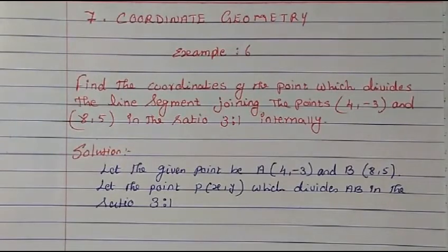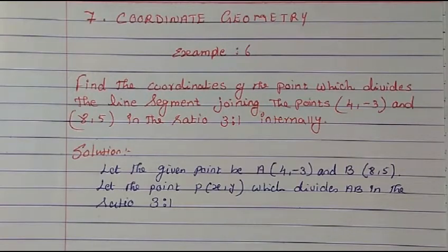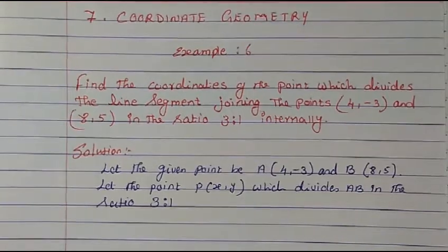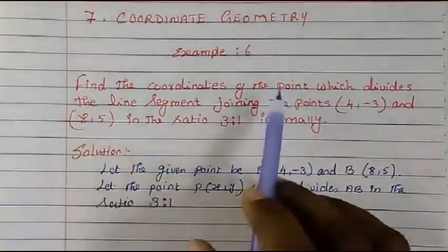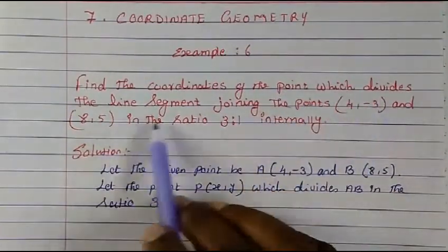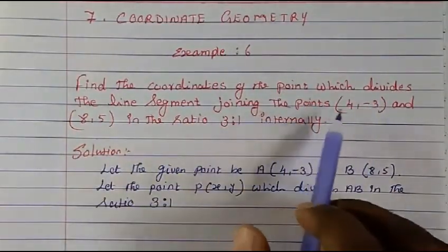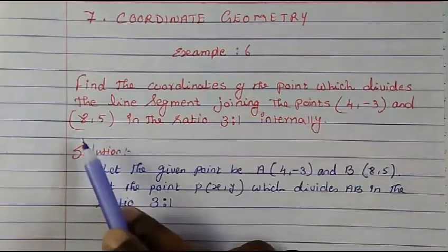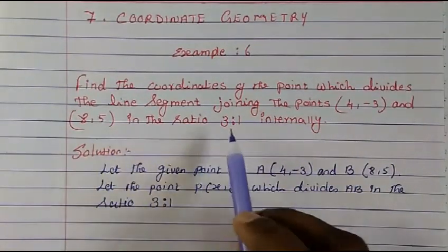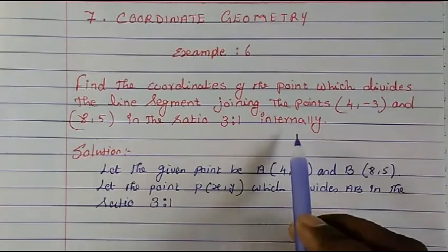Hi everyone, welcome to Mash Math. Today we are going to study from Class 10, Chapter 7, Coordinate Geometry. We are going to see Example 6: find the coordinates of the point which divides the line segment joining the points (4, -3) and (8, 5) in the ratio 3:1 internally.